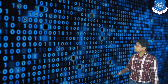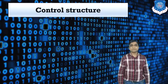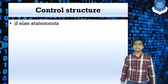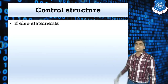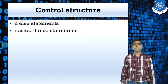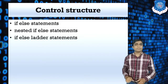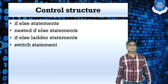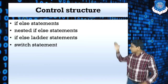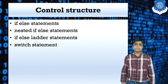Let's start with the first topic: control structures. The different control structures available in Java are: the if-else statement, the nested if statement, the if-else-if ladder, and the switch-case statement. I will explain all of these with live programming.